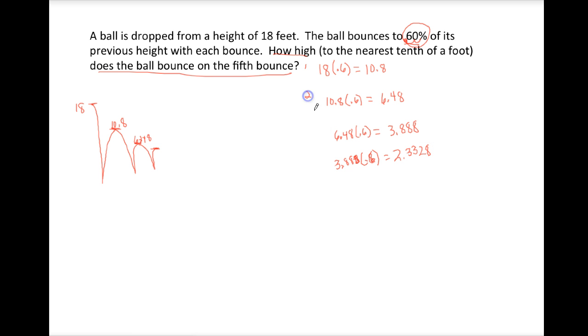So here's my first, second, third, fourth and the next one would be my fifth. So I take my 2.3328 times .6 and I get 1.399. They wanted that rounded to the nearest tenth. This 9 makes me round up to 1.4 feet.